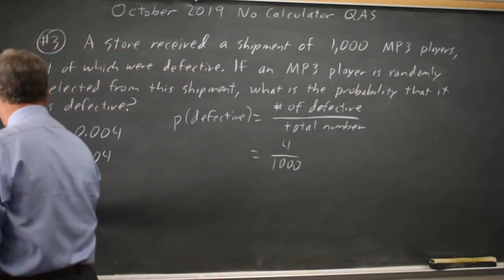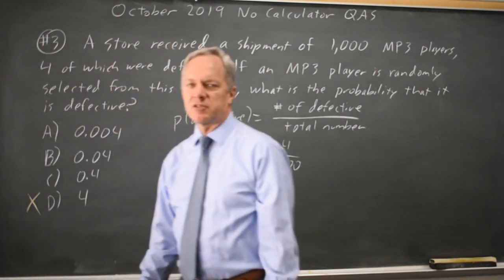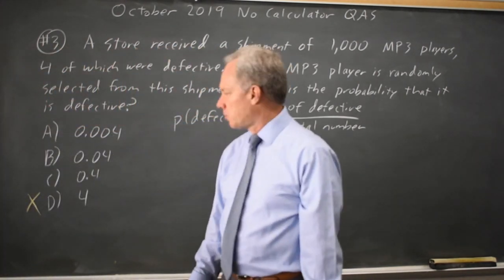Choice D, four, is always wrong for probabilities. Probabilities have to be from zero to one inclusive. They cannot be bigger than one.